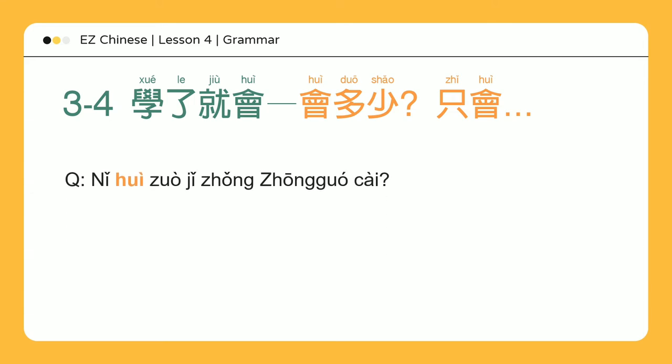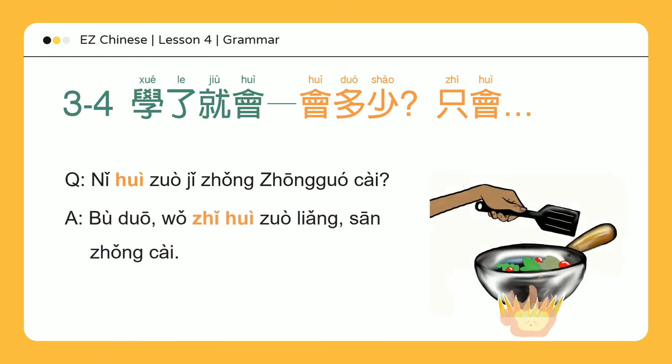会多少 — How much do you know? 你会做几种中国菜? — How many types of Chinese food do you know how to cook? 不多 — Not many. 我只会做两三种菜 — I only know how to cook two or three kinds.